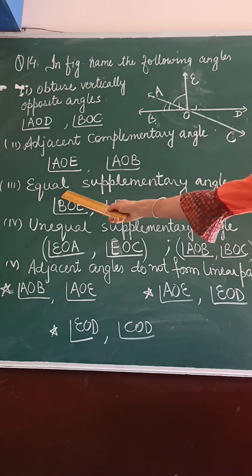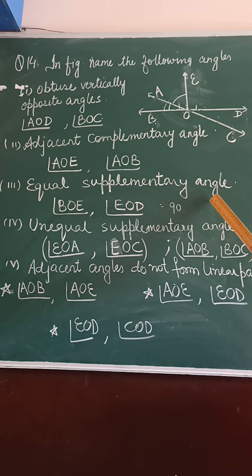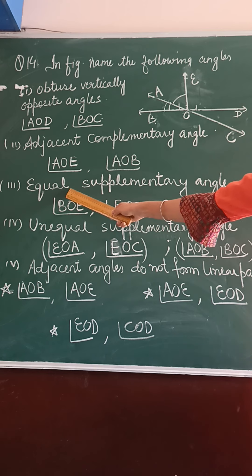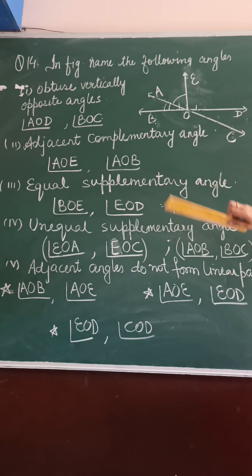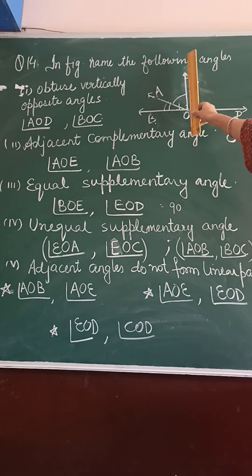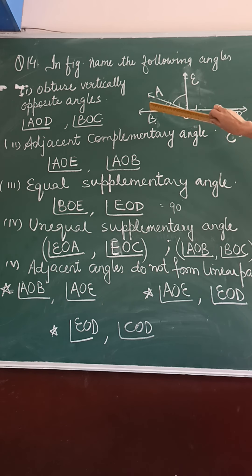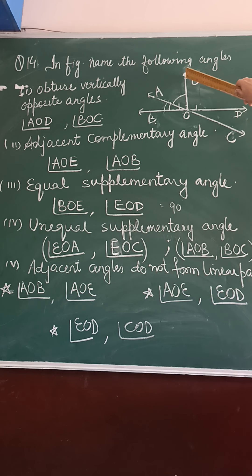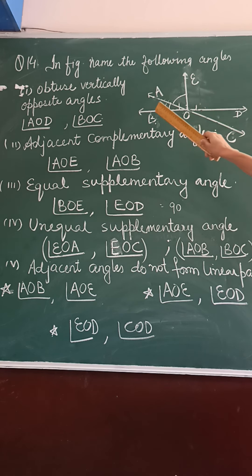Third part: equal supplementary angle. Supplementary angles have a sum of 180 degrees. Equal supplementary angle means each angle is equal to 90 degrees. There is a perpendicular on the line PD. So we are taking angle B, O, E — this is 90 degrees — and E, O, D — this is also 90 degrees. So they are equal supplementary angles.